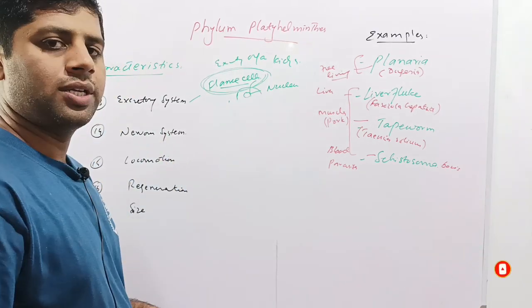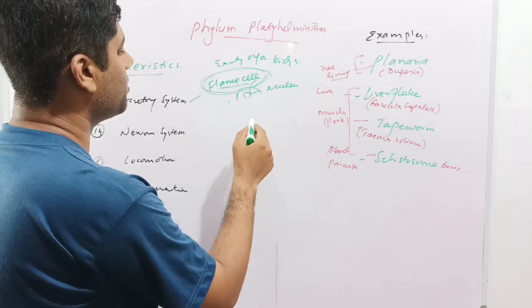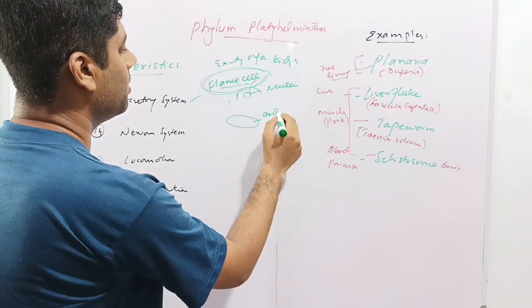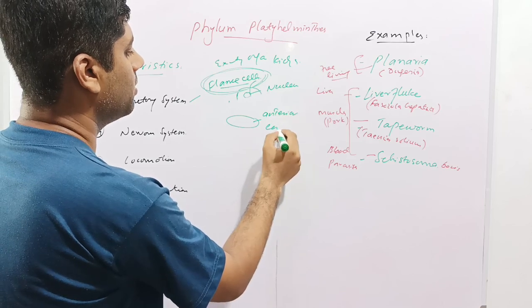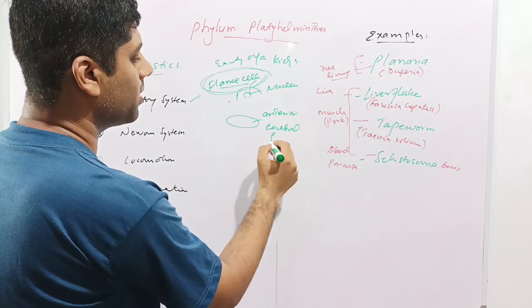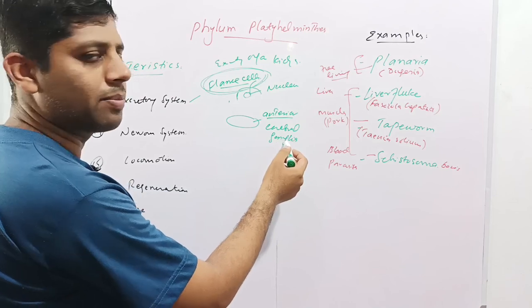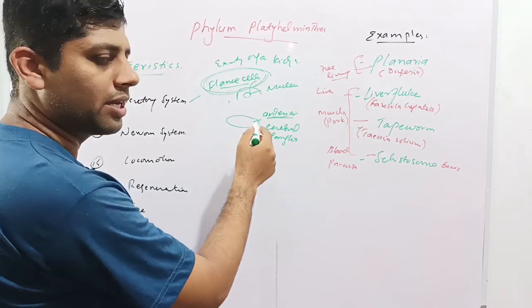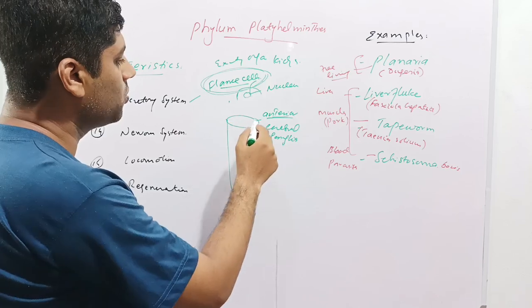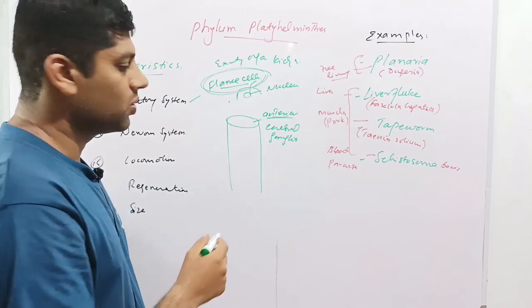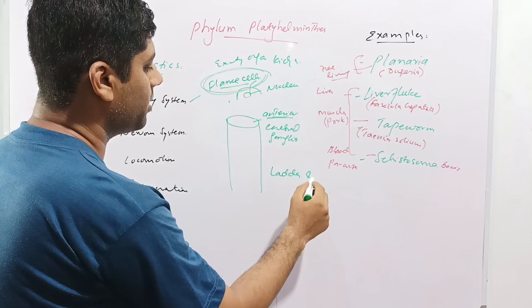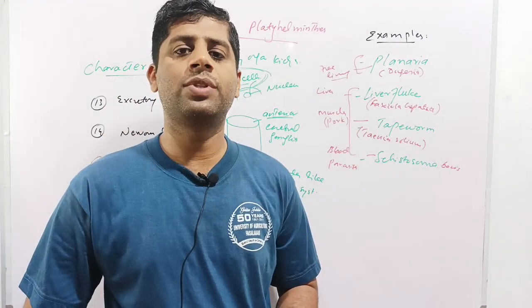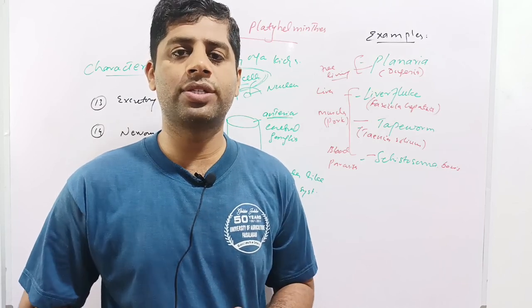Next is the nervous system. In Platyhelminthes, there is a characteristic nervous system comprising an anterior cerebral ganglia or brain. This cerebral ganglia is present on the anterior side, from which two nerve cords arise. This gives a ladder-like nervous system, which is the characteristic feature of Platyhelminthes.